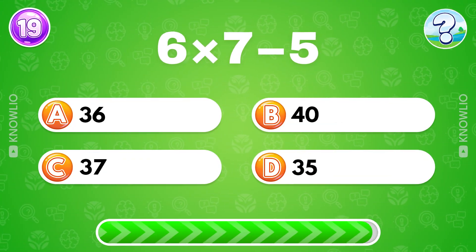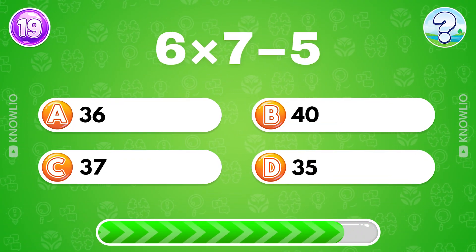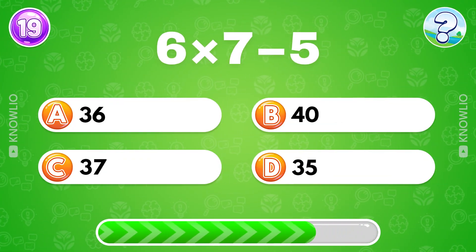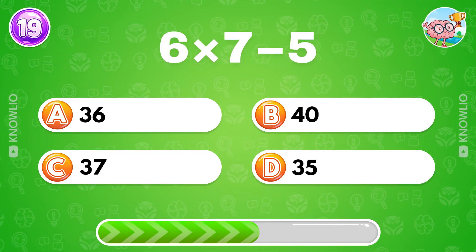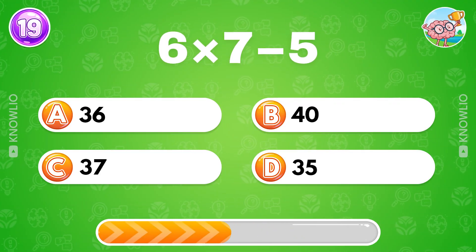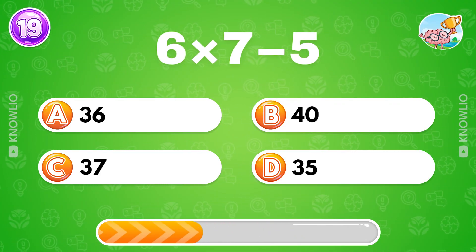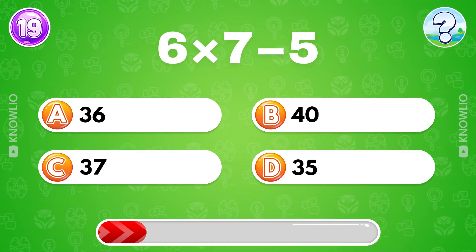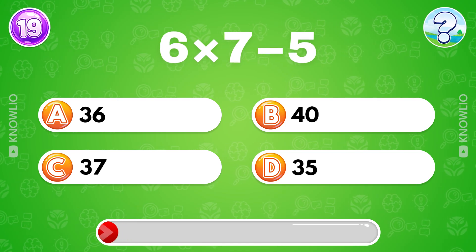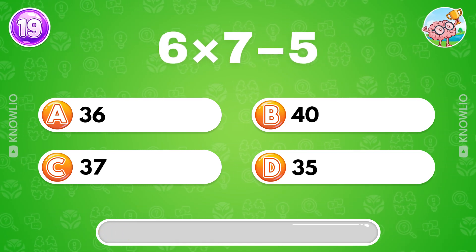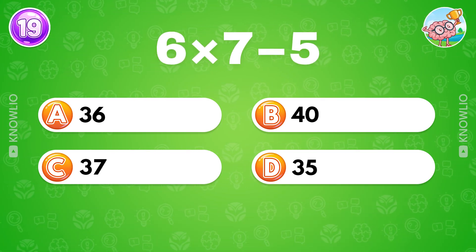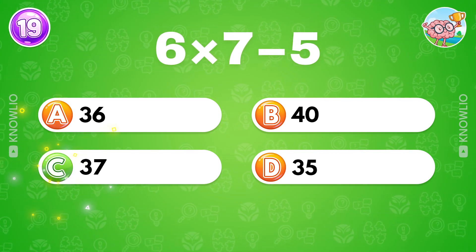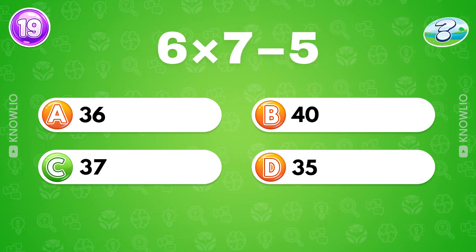6 multiplied by 7 minus 5? Answer C: 37.